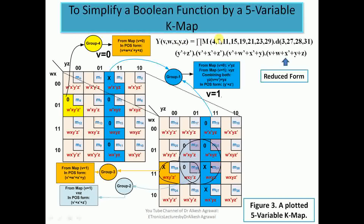Group 3 is a combination of one don't care condition and one max term forming a group of two, confined to the V=1 map. Since V=1, we write V̅; W=1 and X=1 so we write W̅ and X̅; Y is zero so we write Y. Reduced form is (V̅+W̅+X̅+Y). The isolated max term M4 is treated directly: V=0 gives V, W=0 gives W, X=1 gives X̅, YZ=00 gives Y and Z. Its reduced form is (V+W+X̅+Y+Z).